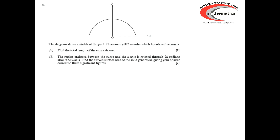The first job is to find out what the start and finish points on the curve are — in other words, find out where y = 0, which is where cosh x = 2. So we've got x = cosh⁻¹(2) and x = −cosh⁻¹(2) as our limits.